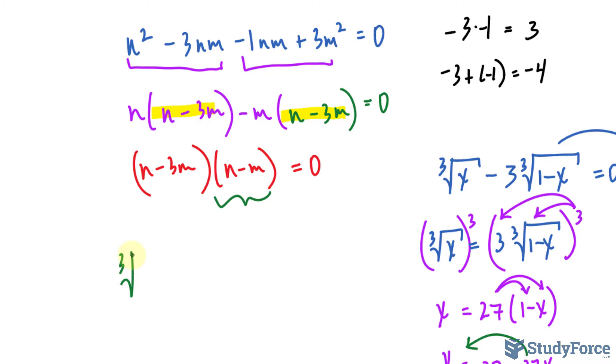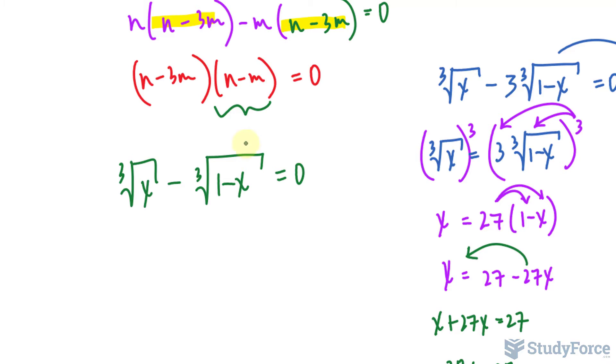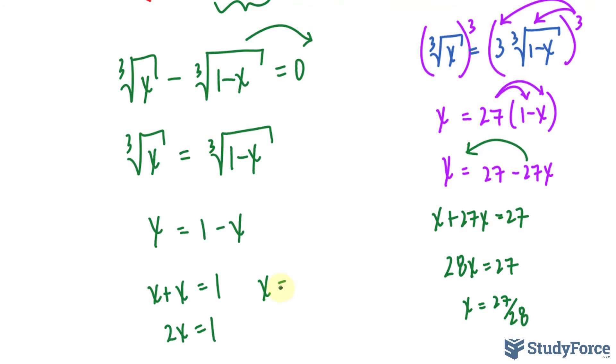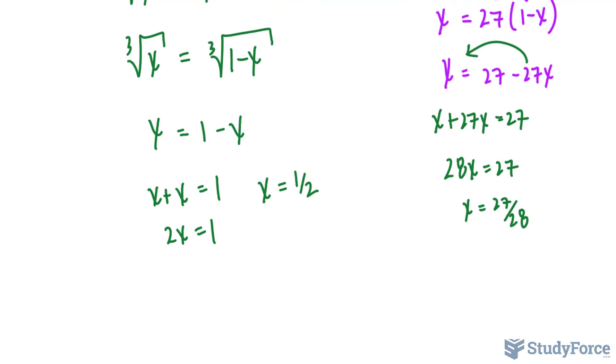So the cube root of x, which I will replace with n, minus the cube root of 1 minus x is equal to 0. Solving the same way as before, and I'll do this quickly, eventually we end up getting x is equal to half. So the two solutions here are half and 27 over 28.